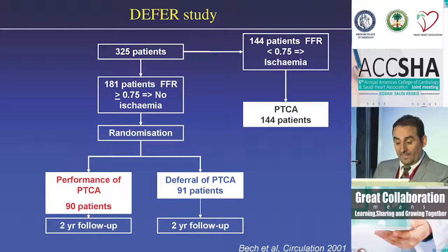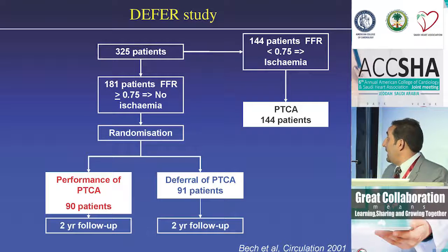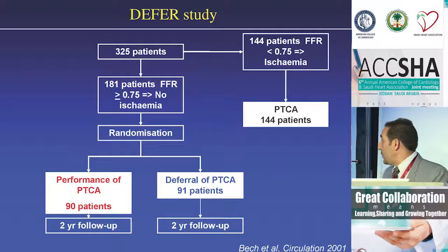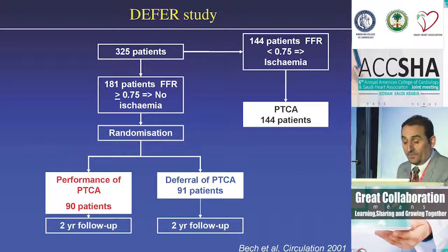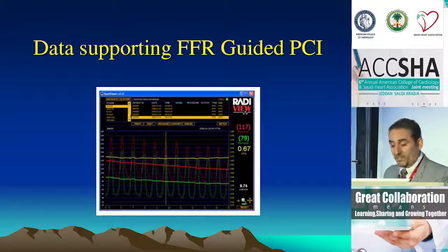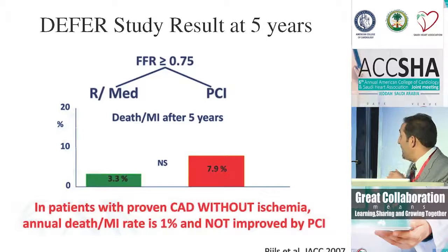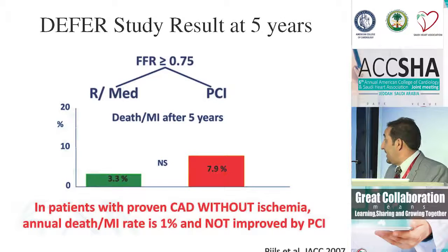Shall we guide our PCI with FFR? The deferred trial looked at patients with chest pain — around 300 patients. If FFR was less than 0.75, which was the cutoff at that time, they went for PCI. The remaining approximately 180 patients were randomized half-and-half: either proceed with PCI per angiography or defer it since FFR was not significant. The deferred group did well — up to two years, and then followed to five years — with half the event rates, though the p-value did not reach significance due to the small group. Annual cardiovascular event rates were less than 1%.